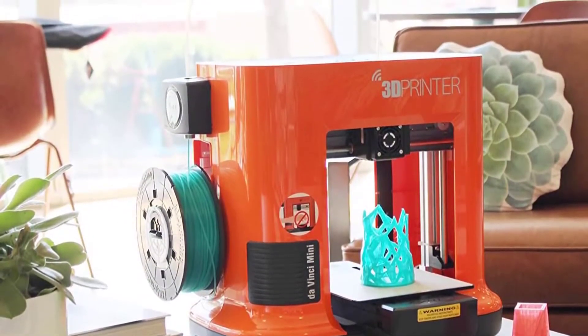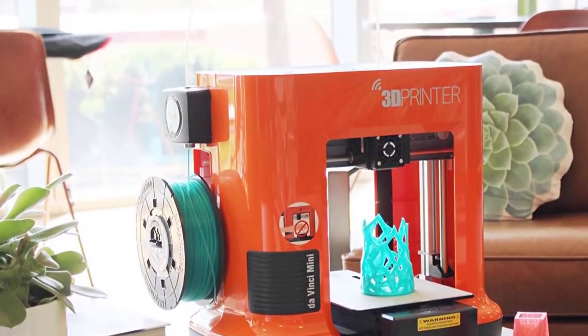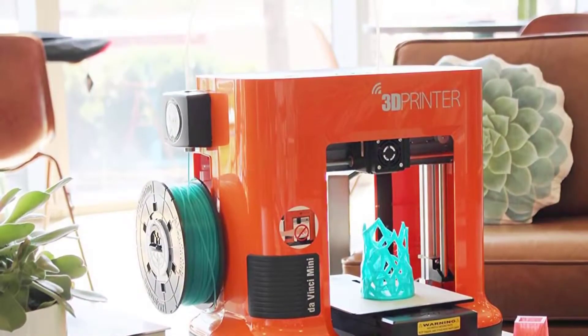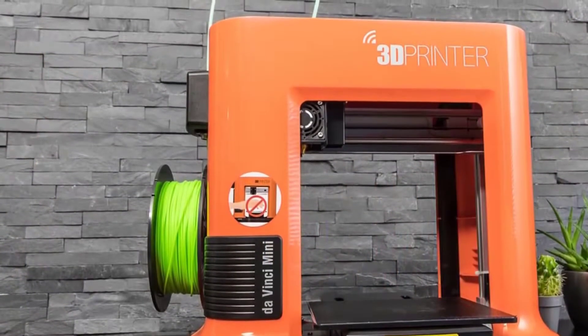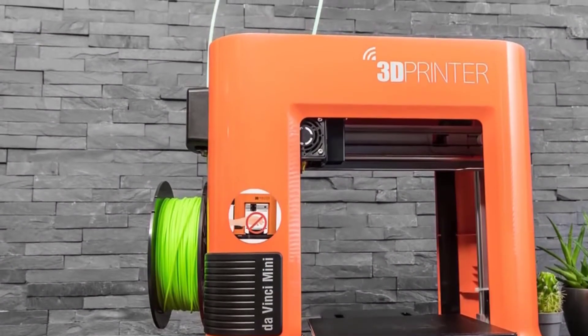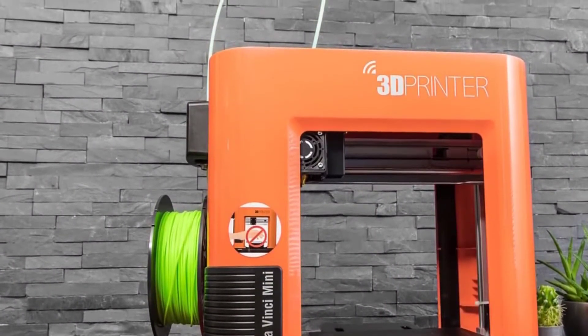Design-wise, with its bright orange plastic case, the DaVinci Mini definitely stands out from the crowd of black printers. Additionally, the case covers the workings of the printer, but the print bed and hot extruder are still open to the world.